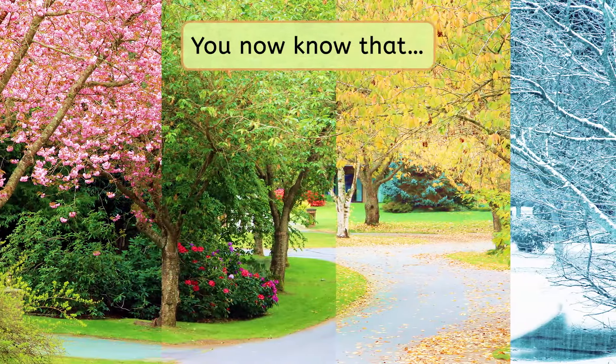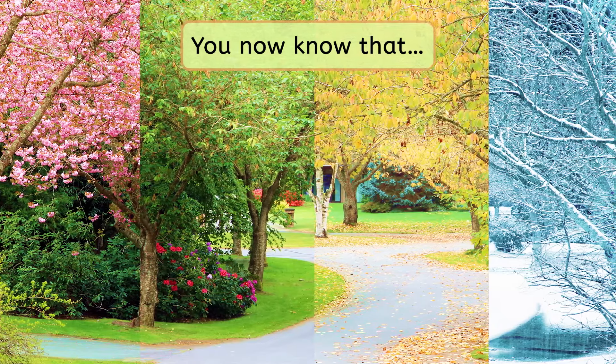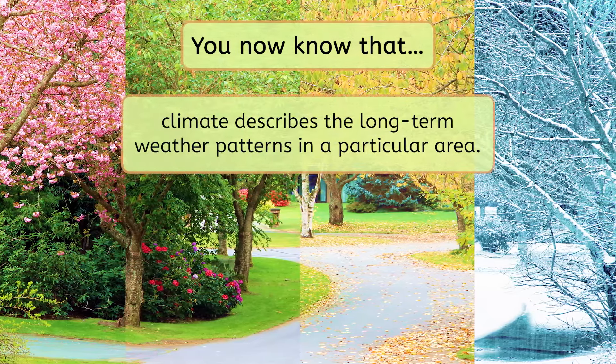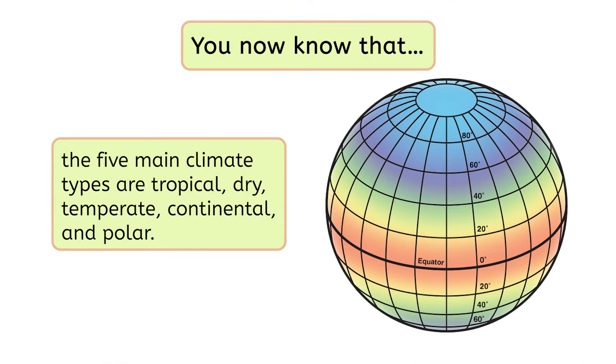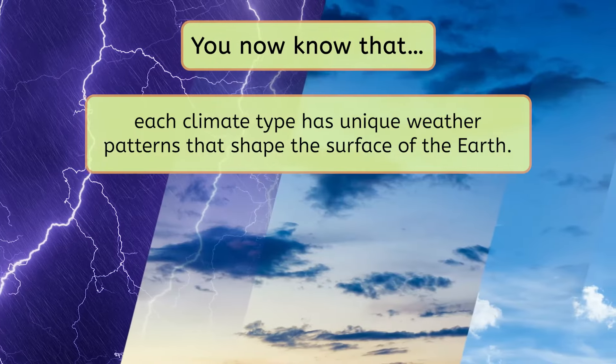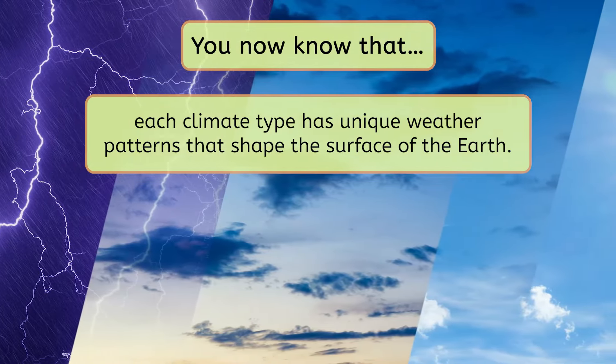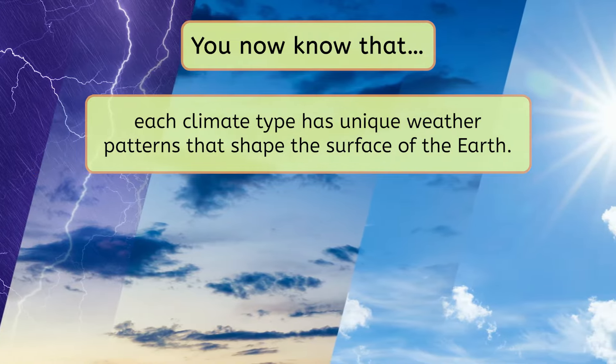So let's review what we learned today. Now you know that climate describes the long-term weather patterns in a particular area, that the five main climate types are tropical, dry, temperate, continental, and polar, and that each climate type has unique weather patterns that shape the surface of the Earth. In our next lesson, we'll take a closer look at the Earth's atmosphere to learn about why each climate type on Earth is so different. In the meantime, be sure to check out the extension activities and practice activities that go with this lesson.